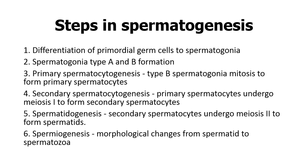The primary spermatocytes then undergo meiosis 1 to give you secondary spermatocytes, which is what we call secondary spermatocytogenesis. The whole process of formation of spermatocytes up to the level of the secondary is known as spermatocytogenesis in general. So you can collapse steps 3 and 4 into spermatocytogenesis.